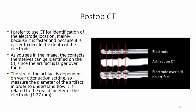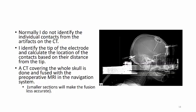Concerning postoperative CT, I prefer to use this for identification of the electrode location, mainly because it is faster and because it is easier to decide the depth of the electrode. As you see in the images here, the contacts themselves can be identified on the CT since the artifact is larger over them. The size of the artifact is dependent on your attenuation setting, so measure the diameter of the artifact in order to understand how it is related to the real diameter of the electrode. Normally, I do not identify the individual contacts from the artifacts on the CT. I identify the tip of the electrode and calculate the location of the contacts based on their distance from the tip. A CT covering the whole skull is done and fused with the preoperative MRI in the navigation system.